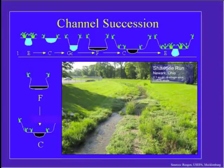The channel evolution model, or the channel succession model, is a common enough sequence that it's described in the literature very well, and has been for a long time. We start in an initial state, it's disturbed, it goes through one sequence or another, winding up at another state that's similar to the first state — similar to what is appropriate for the watershed, fit to the watershed condition.